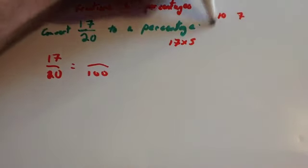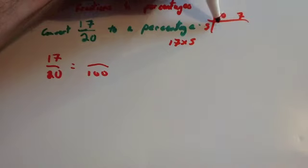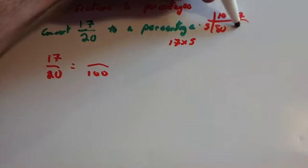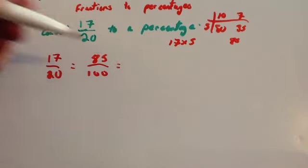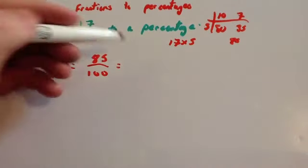So do 10 and 7 and do your 5. 5 times 10 is 50, 5 times 7 is 35. Add them together, you get 85. So it's 85 out of 100. Now, 85 out of 100, well then that's 85%.